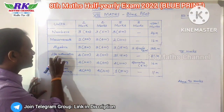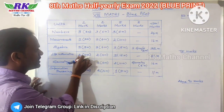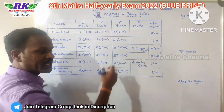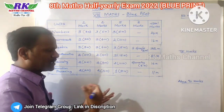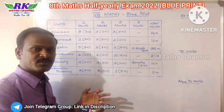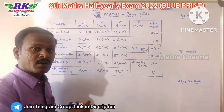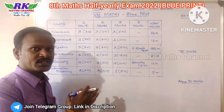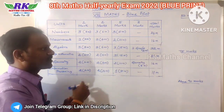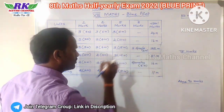In the third unit, you can see Life Mathematics. There is one mark, two marks, two marks, two marks, and five marks — there are different parts. There are percentage topics, compound variation, and time and work. That's why there are three questions. The total is 21 marks.